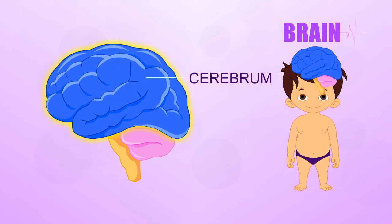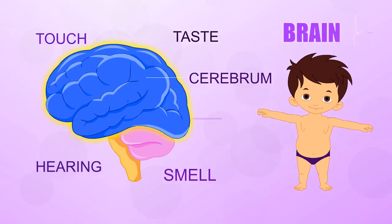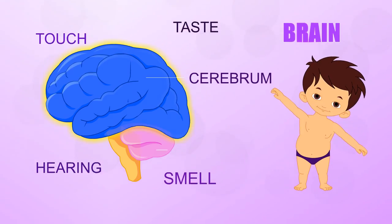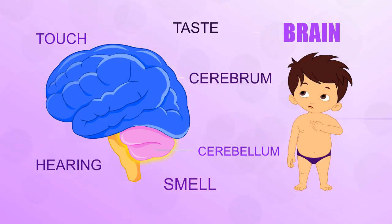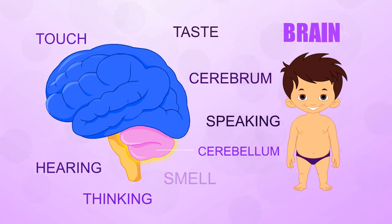The cerebrum is the main part of your brain. It gets and stores information and controls your movements. The cerebrum is also responsible for thinking, speaking, and performing complicated tasks such as sums.